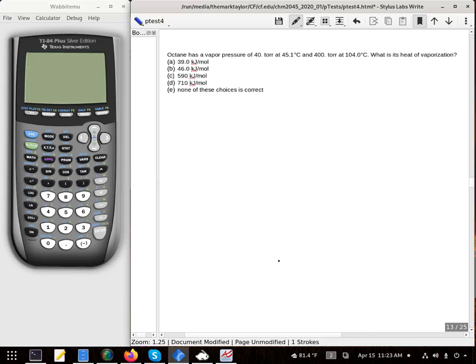Octane has a vapor pressure of 40 torr at 45.1 degrees Celsius and 400 torr at 104.0 degrees Celsius. We want to solve for the heat of vaporization. We are going to use the Clausius-Clapeyron equation.